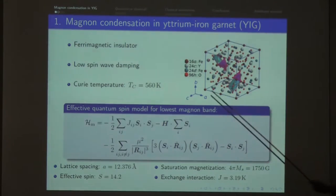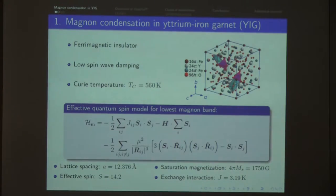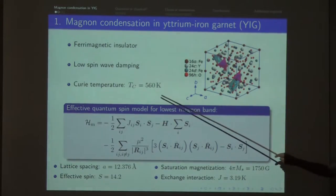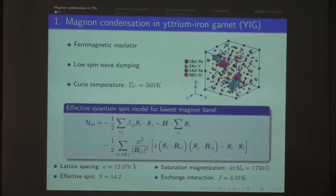This is a unit cell of YIG. I guess we haven't seen that yet at this conference. It looks very complicated, and when I first saw it I said I'm not working on YIG — it's too complicated. It has more than 100 atoms per unit cell. It's a ferrimagnetic insulator, not a ferromagnet, and it has many magnon bands, I think 14 or 16. It has a big advantage: very low spin wave damping, and a high Curie temperature, so at room temperature you have a well-ordered magnet. For some purposes you can work with an effective spin model which captures the magnon dispersion in the relevant magnon band probed by experiments.